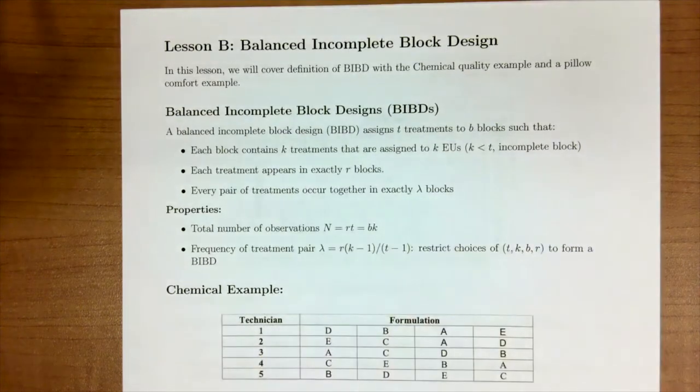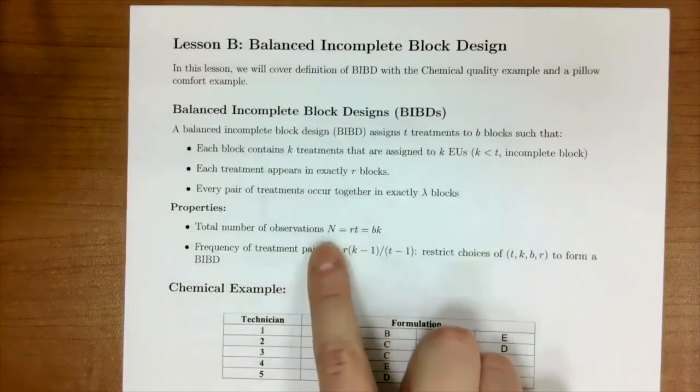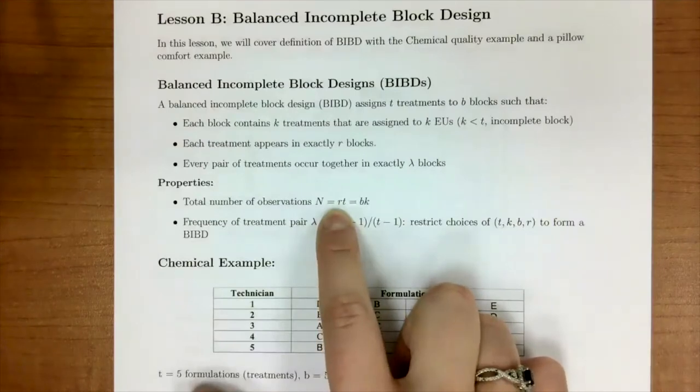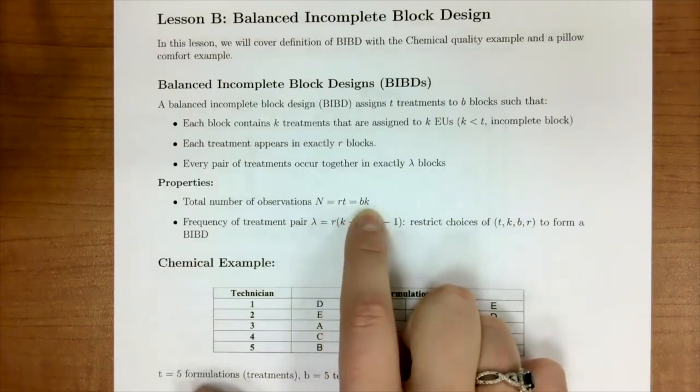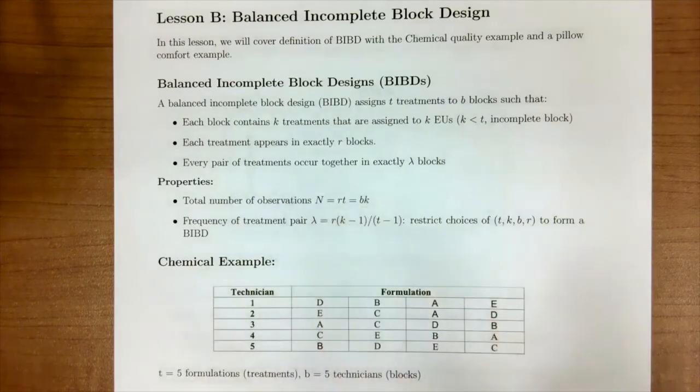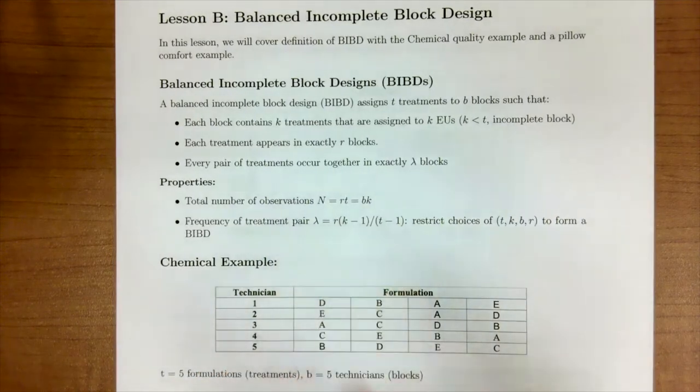The properties here are our total number of observations is n equals r times t or b times k. Our frequency of treatment pairs is lambda and it follows this formula. You don't need to memorize this formula.